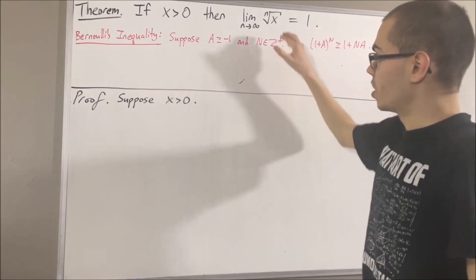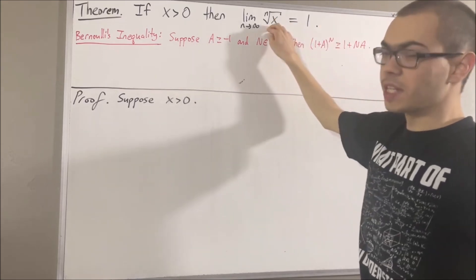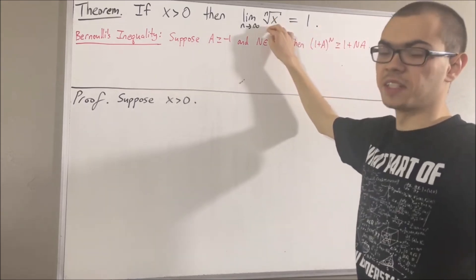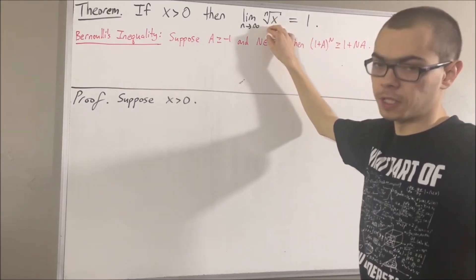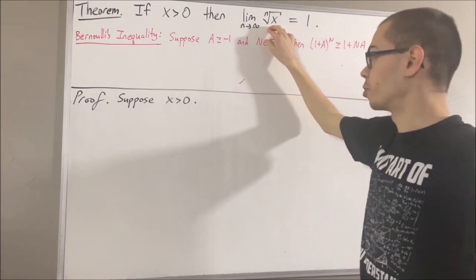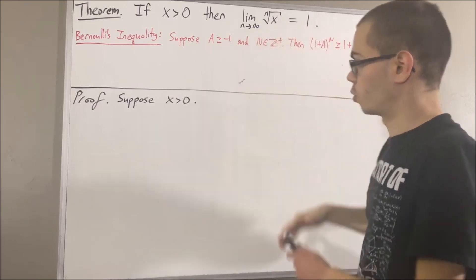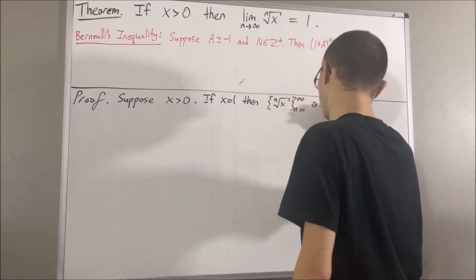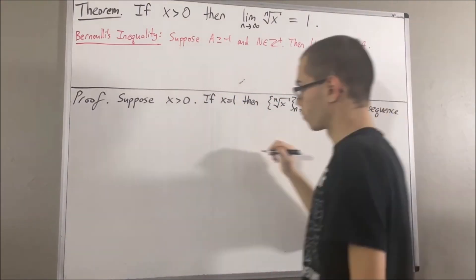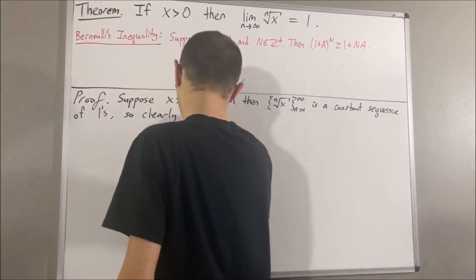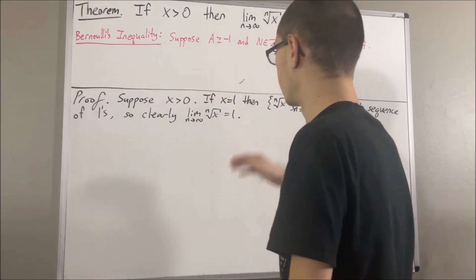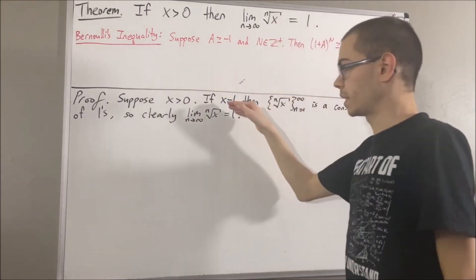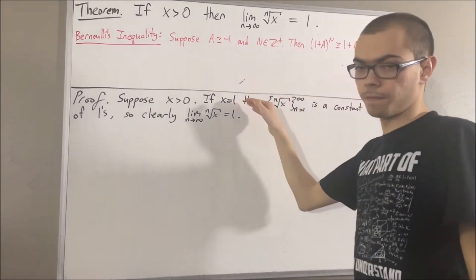If x is equal to 1, then this is just a constant sequence of 1s. So clearly, it converges to 1. This completes the case x equals 1.